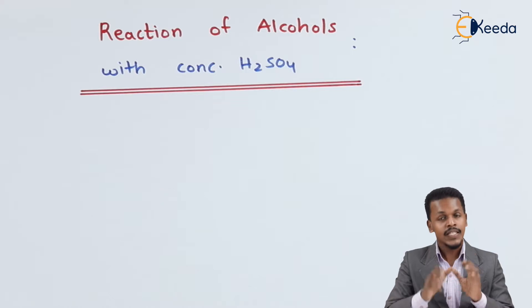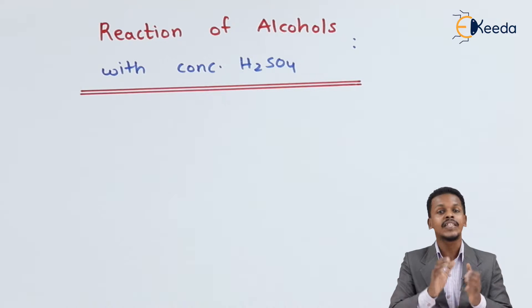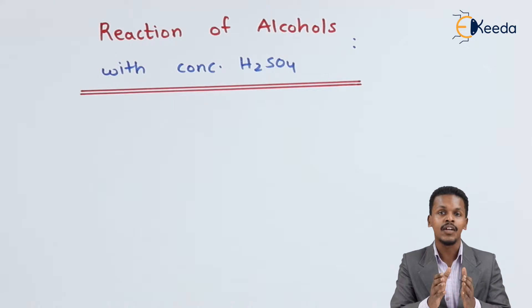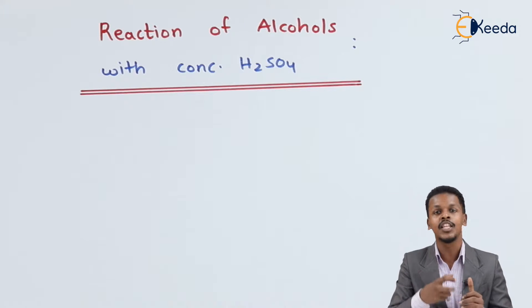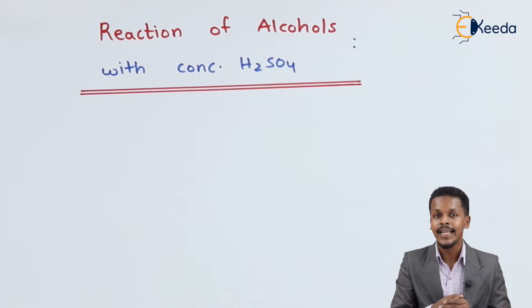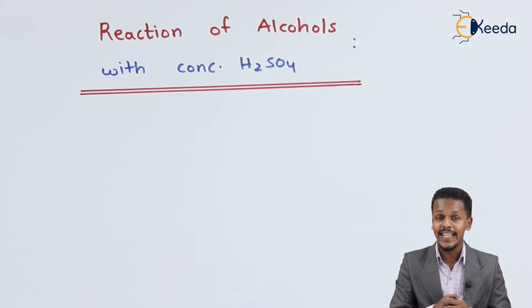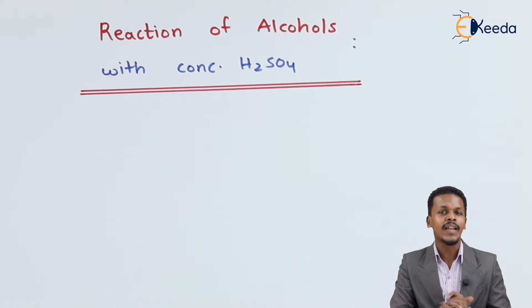So this is the reaction we are going to discuss — that is, how we can convert alcohol into an alkene by the removal of water, which is known as the dehydration process. Now let me give you an example related to this.